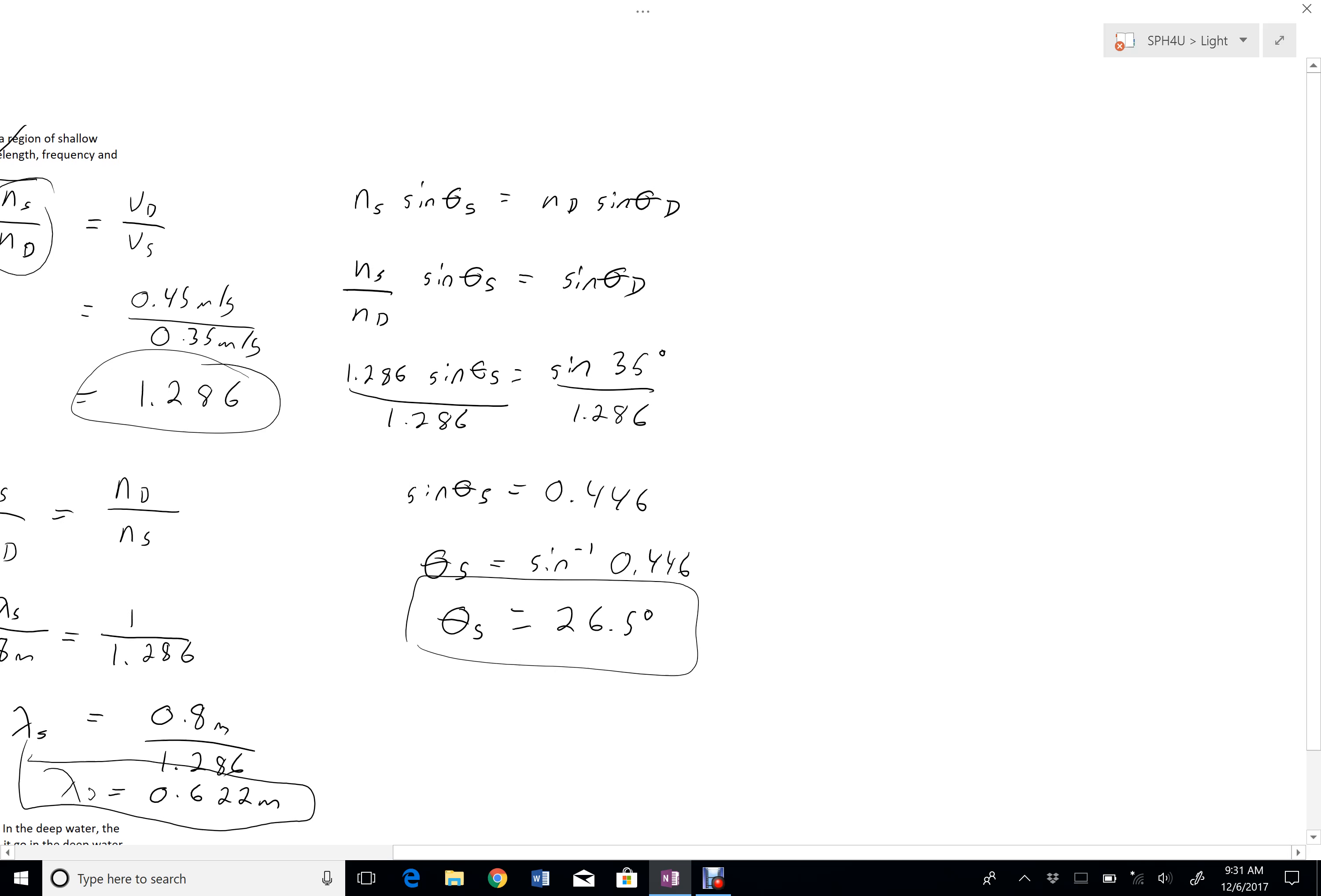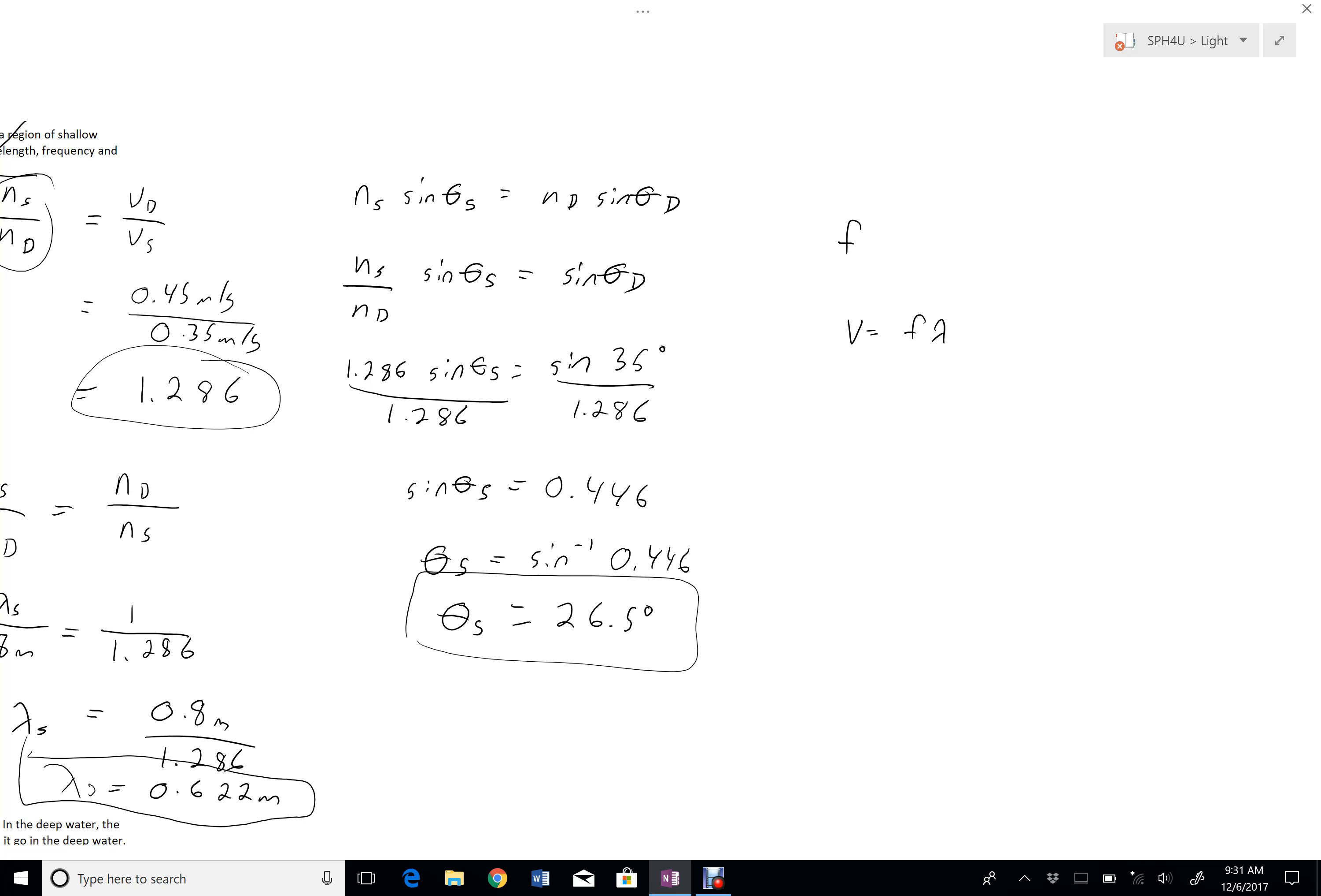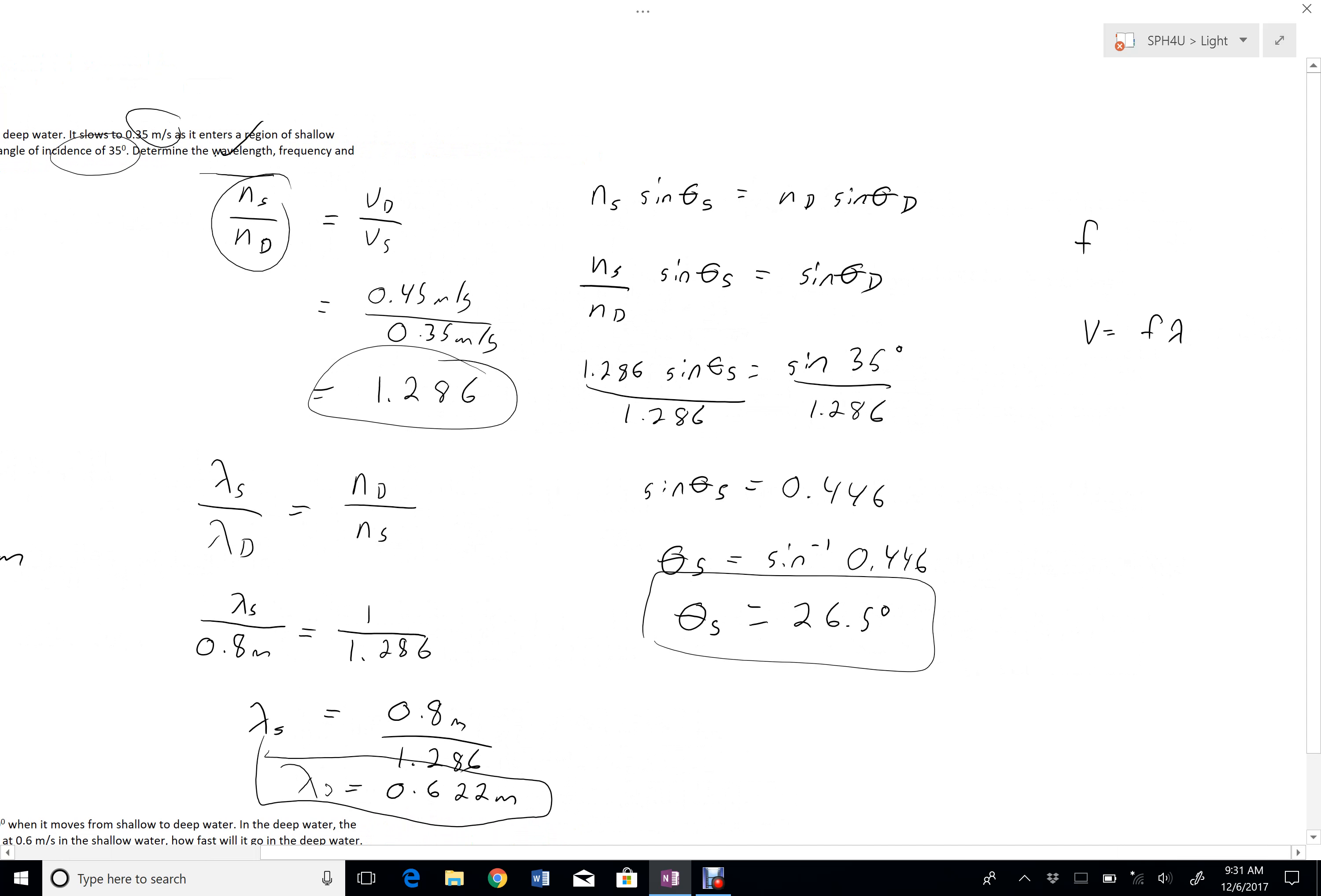So all I'm missing is my frequency. I can get my frequency by using the universal wave equation V equals F lambda. And I can use that in the shallow or the deep water. It doesn't make any difference because when a wave goes from one medium to another medium, its frequency remains constant. So whichever one I find it in, that's the same frequency regardless of where we're at.